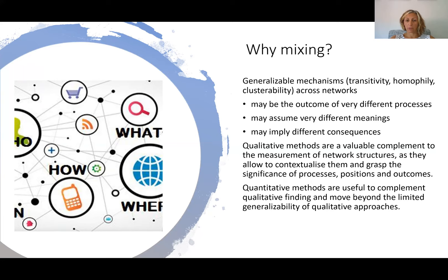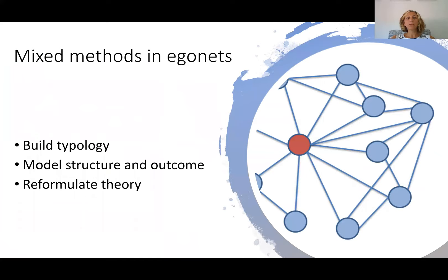On the other hand, when we use quantitative methods applied to social network analysis — as in classic statistical modelling — we can complement qualitative findings and move beyond the limited generalizability of the qualitative approach. So when we mix methods in Egonets, we can do it with the aim of building typologies, modelling structures and outcomes of networks, or to reformulate social network theories.